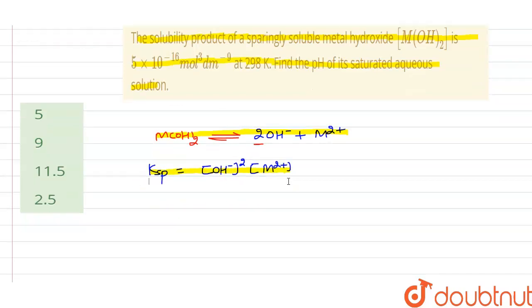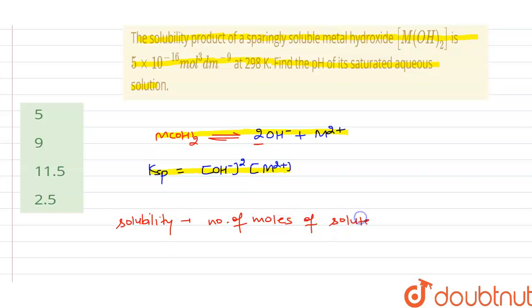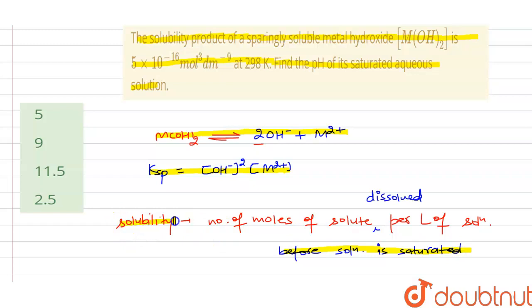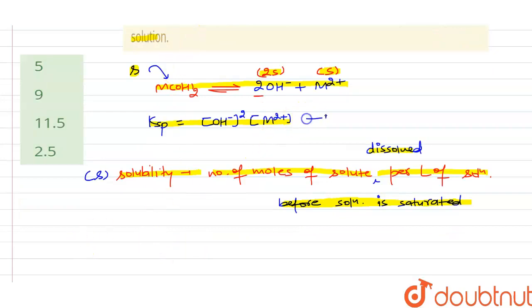One important point: solubility, indicated by small s, is defined as the number of moles of solute dissolved per liter of solution before the solution becomes saturated. For the sparingly soluble salt M(OH)₂ with molar solubility s, dissociation gives 2s for OH⁻ and s for M²⁺.